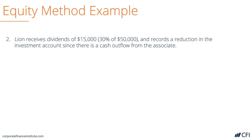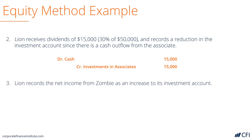Lion receives its dividend of $15,000, which is its proportionate share, and records that transaction. So it debits cash $15,000 and credits the investment in associates $15,000.